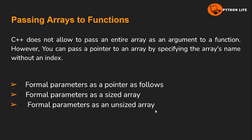For formal parameters as a pointer, we add void as the return type, a function name, and in parentheses an asterisk parameter. For formal parameters as a sized array, we mention the array with a specific size: void, return type, function name, and an asterisk parameter array with the size specified.